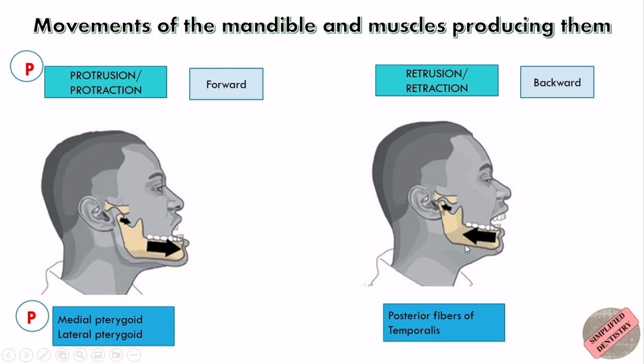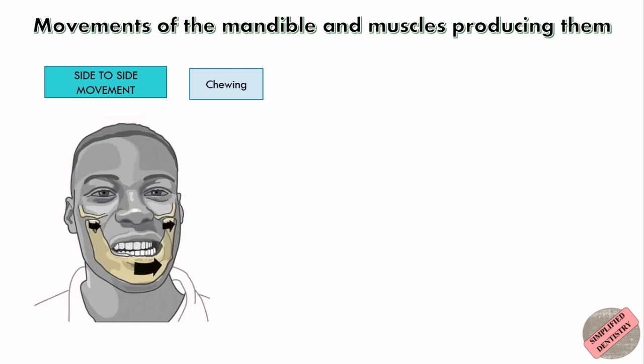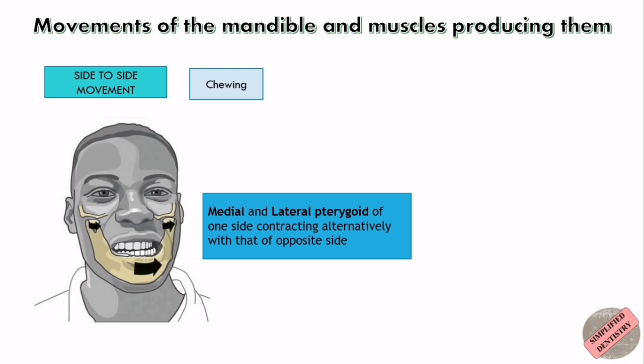Now, the side-to-side movement — that is chewing. During chewing, the medial and lateral pterygoid muscles of one side contract alternately with those of the opposite side. So it is the pterygoid muscles which help in side-to-side movement. The pterygoid muscles not only help in protrusion but also in side-to-side movement.